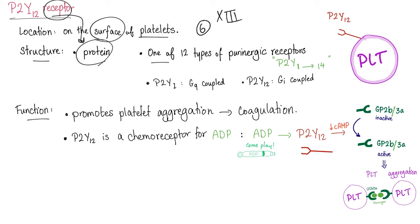Function: they promote platelet aggregation leading to coagulation, because without platelet aggregation, there is no blood coagulation. You need platelet aggregation first, then blood coagulation next. P2Y12 is a chemoreceptor for ADP. So ADP is here, this molecule, and P2Y12 is the receptor for the ADP.